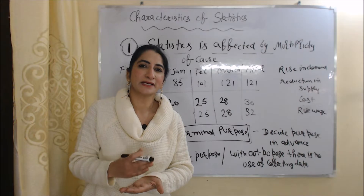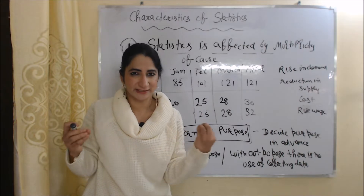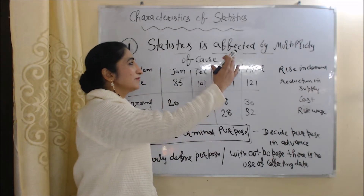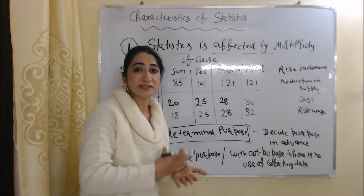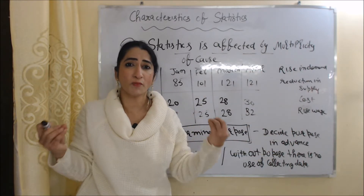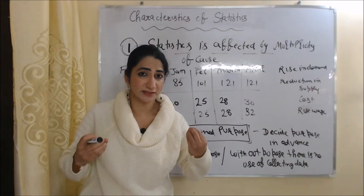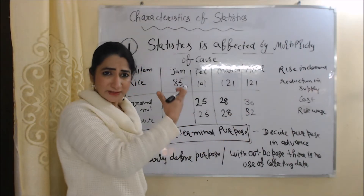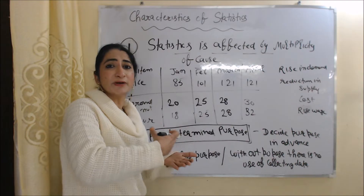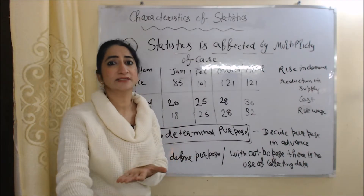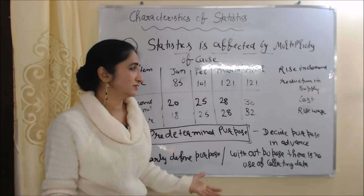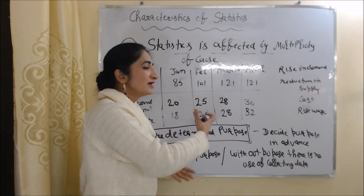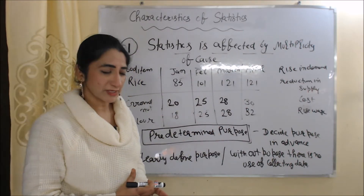Now we are going to talk about characteristics of statistics. The first characteristic is that statistics are affected by multiplicity of causes. It means statistical figures are affected by so many causes — we cannot say that statistical figures are affected by only one cause. For example, prices of food items are continuously rising, and it can be due to many causes such as rise in demand, reduction in supply, increase in cost, or rise in waste.